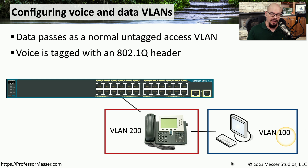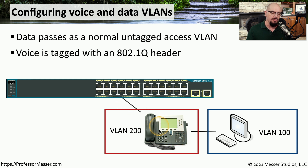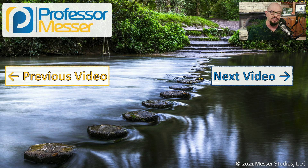Functionally, the computer would be on one VLAN — say VLAN 100 — and the phone would be on a separate phone VLAN, VLAN 200. When we send information from the computer, it is sent across the ethernet link as a normal access ethernet frame without any VLAN trunking. But when communicating from the phone, all communication between the phone and the switch is tagged with an 802.1Q header designating that it came from VLAN 200. This allows us to set priorities in the switch and assure that quality of service is maintained for all voice communication.